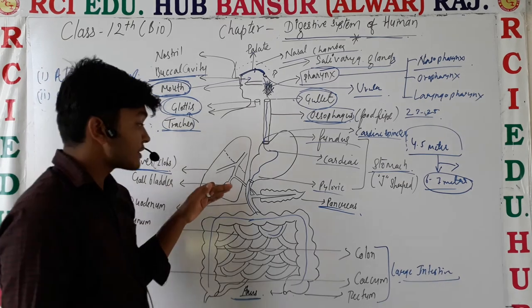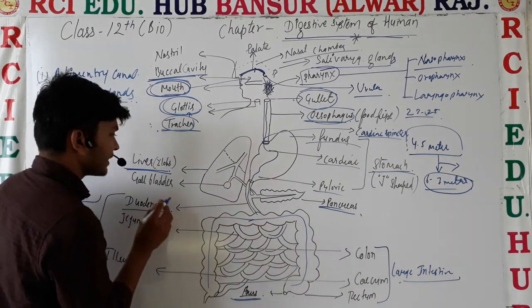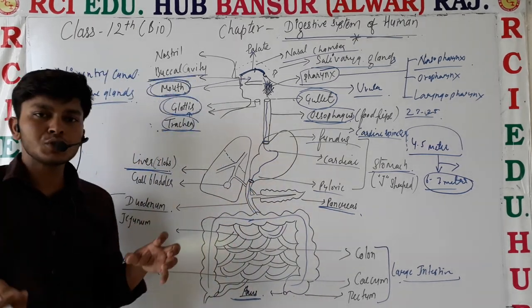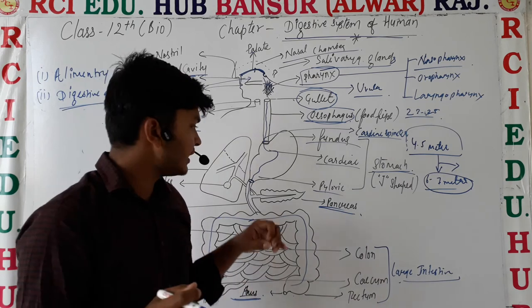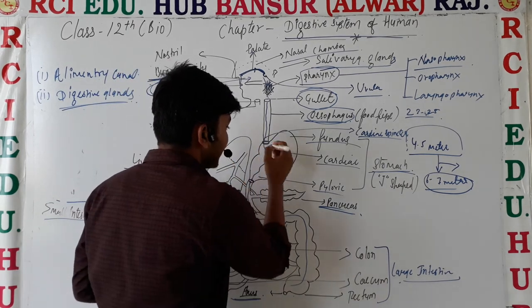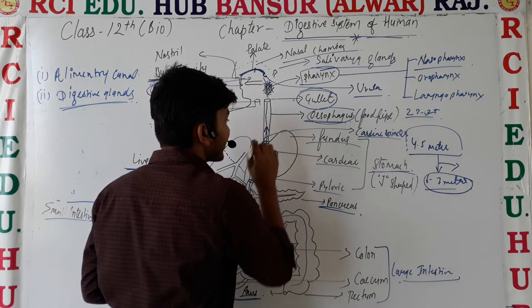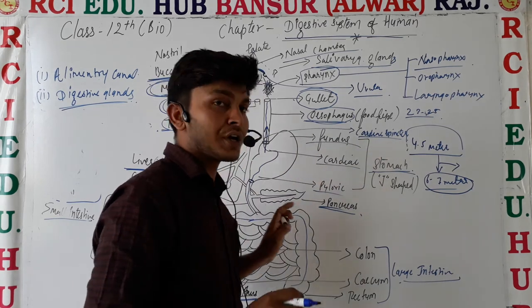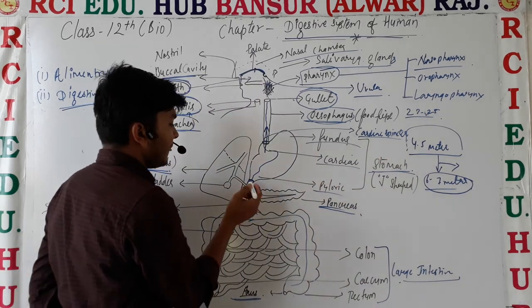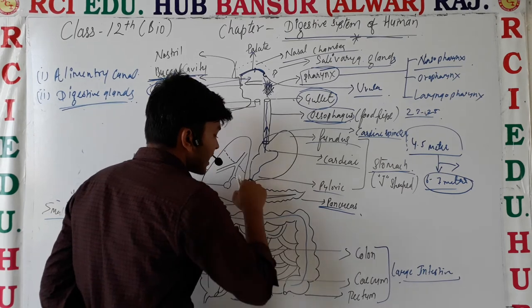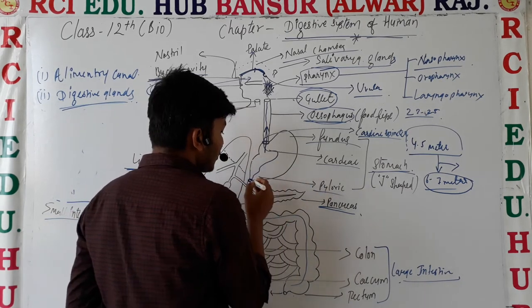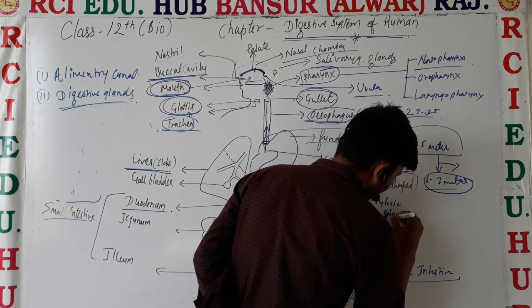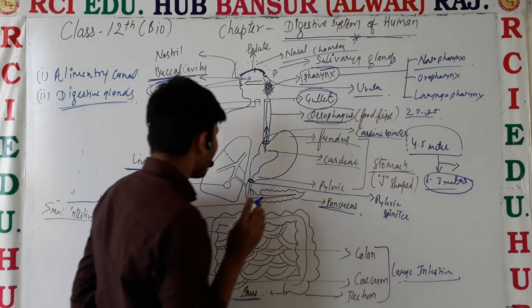The esophagus opens into the stomach, and the small intestine also connects to the stomach at the duodenum region. There are muscular rings called sphincters that continuously contract and relax, preventing the backflow of food material. The sphincter between the esophagus and stomach prevents food from going back up, and the pyloric sphincter is found where the stomach connects to the small intestine.